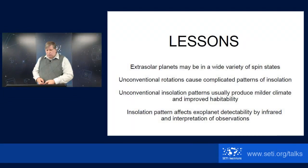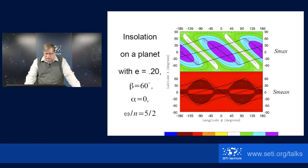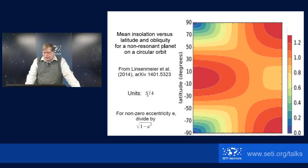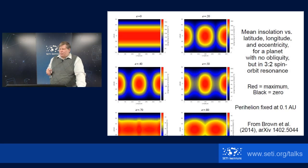My question was also about lesson number three. Is there any program to actually produce global climate models for such weird insolation patterns? There was a first attempt, actually, that just came out. These individuals attempted to study the potential ecological niches on a planet in the three to two spin orbit resonance.